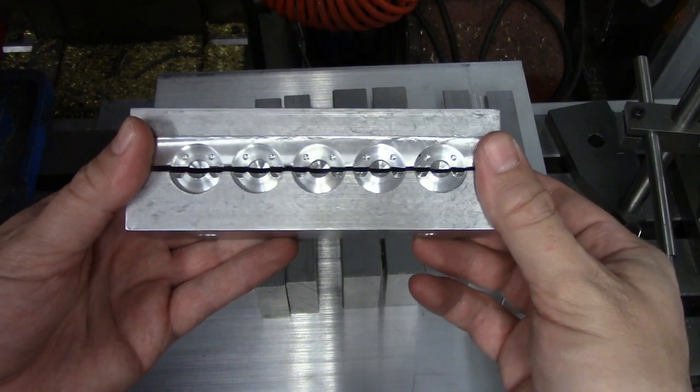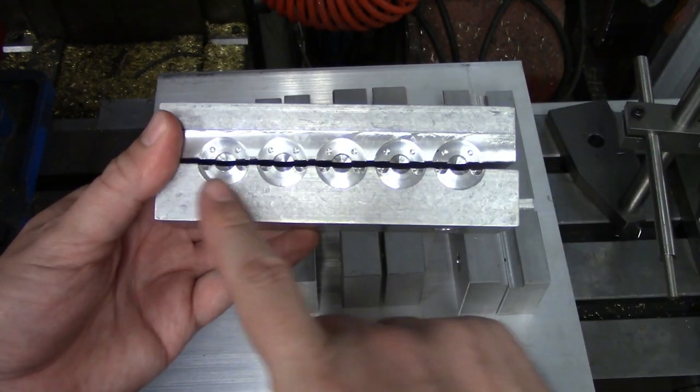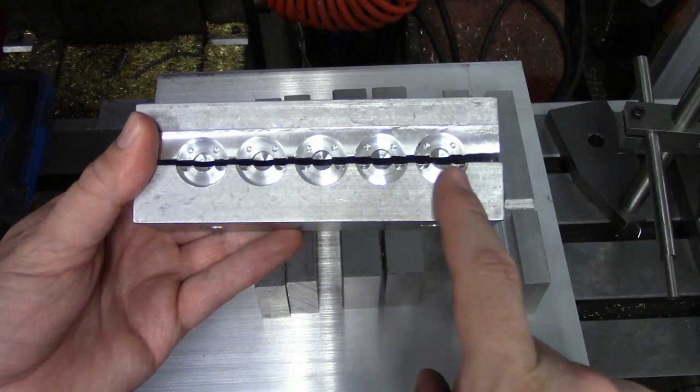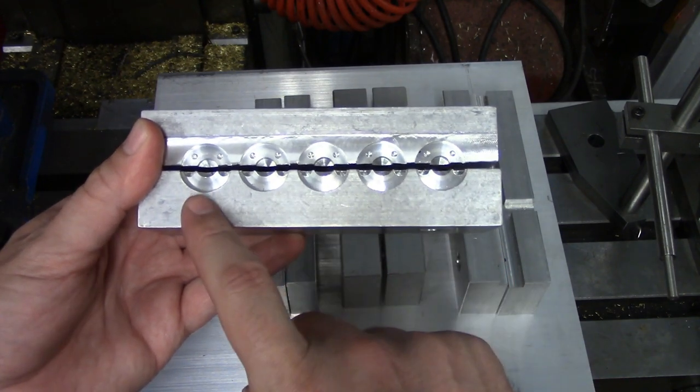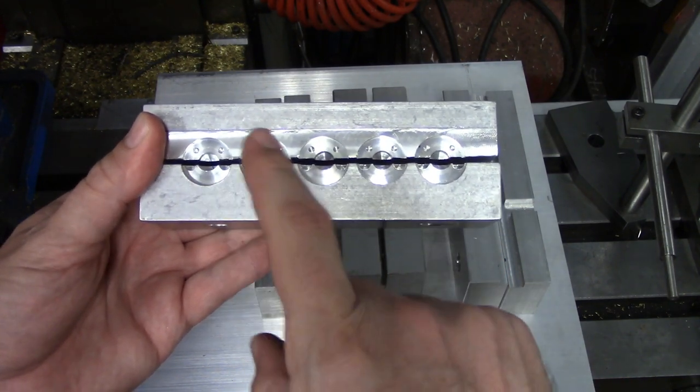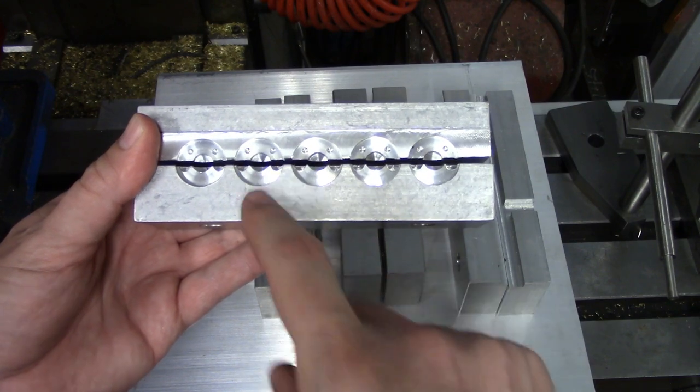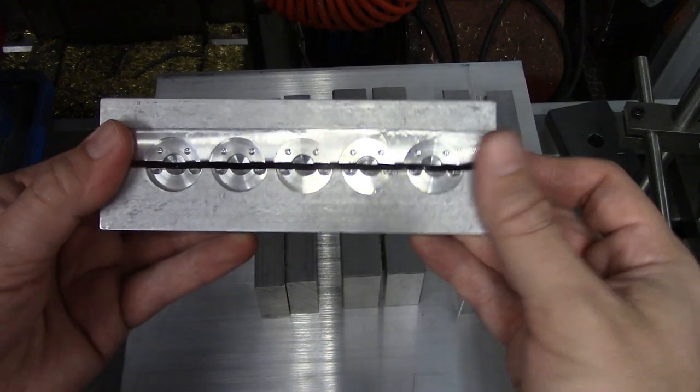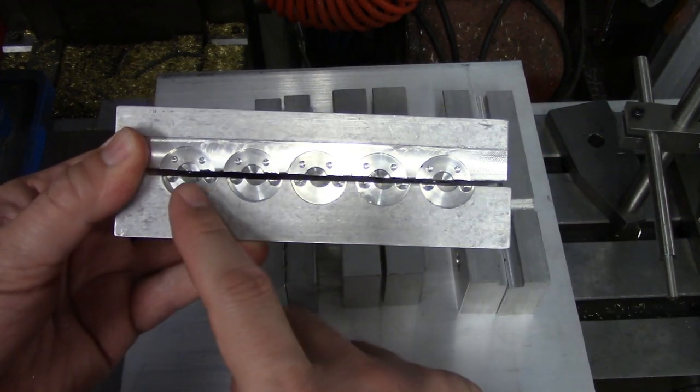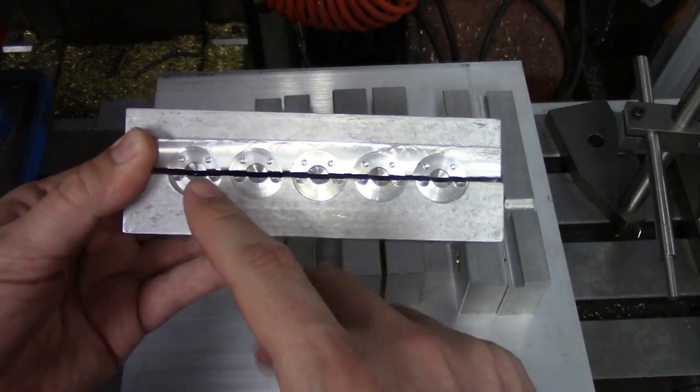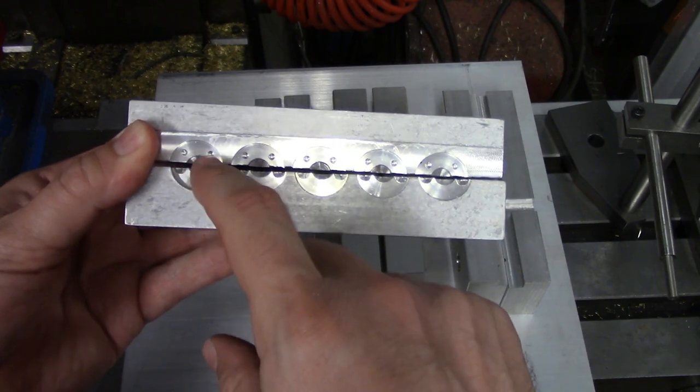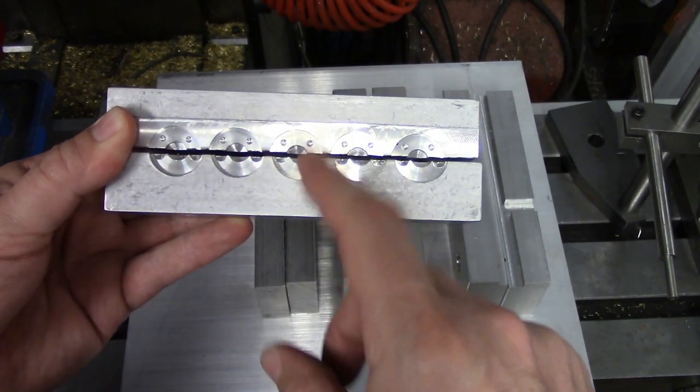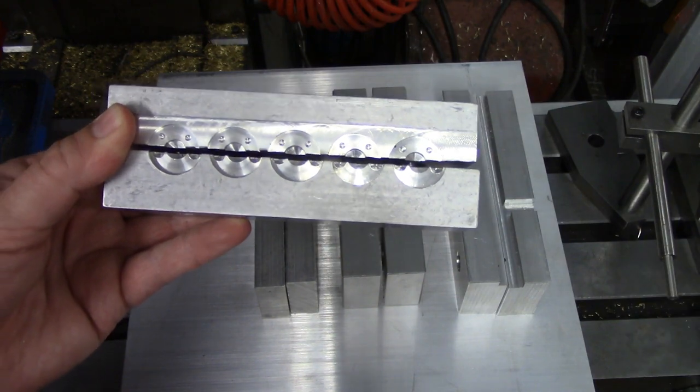And on CNC machines they actually have fixture offsets. So each one of these would be a fixture offset and you would only have to write the program once. Then offset it to this one, it would run again, offset it to that one, so on and so forth. For manual machines obviously you've got to do all the movements yourself, but you know where each of these coordinates are and you just keep moving over and run the exact same coordinates.